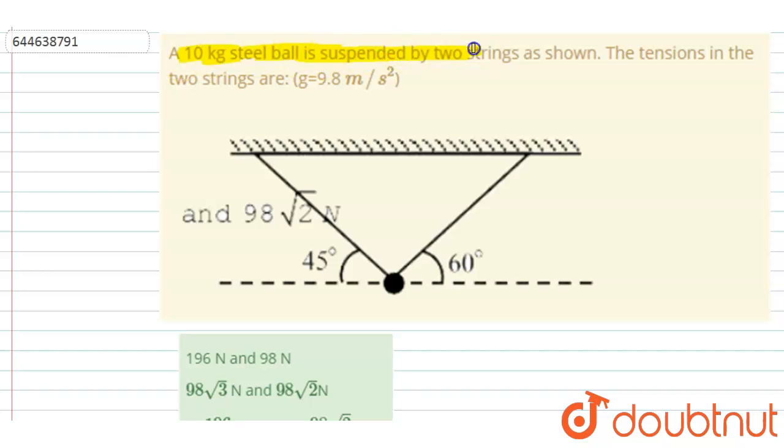The tension in the two strings are, if you see here the tension in the two strings, let's say here the tension is T1 and in this string the tension is T2, and the weight is acting downward mg.